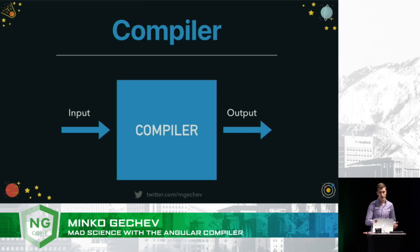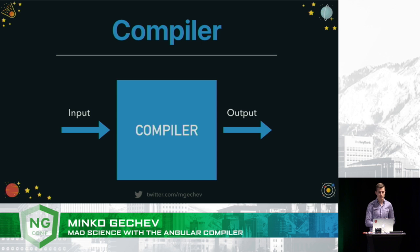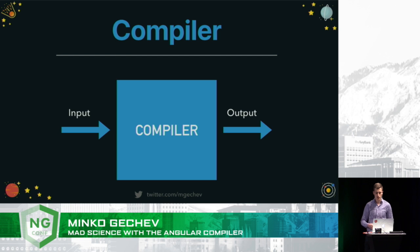It accepts some inputs and produces an output. The inputs, in case of the TypeScript compiler, are going to be some TypeScript program — like TypeScript files — and also some TS config. The output is going to be JavaScript, and on top of that, some type declarations eventually.